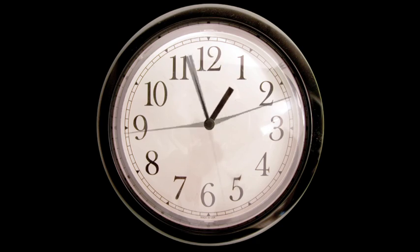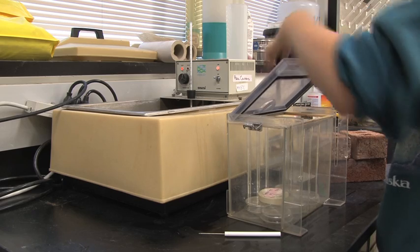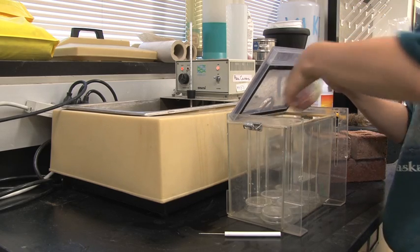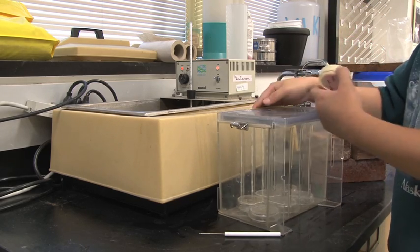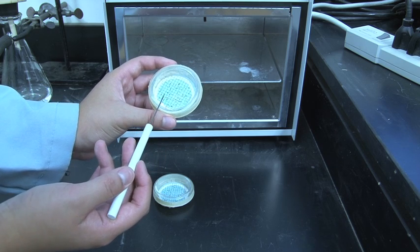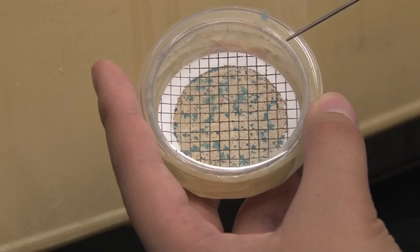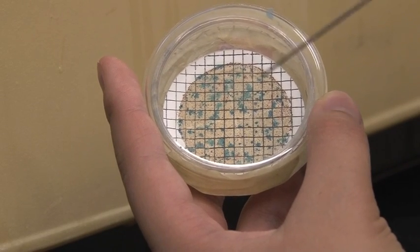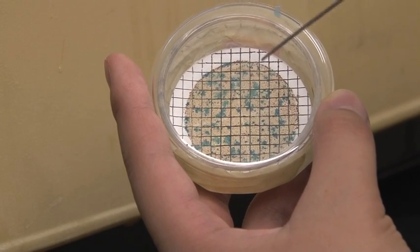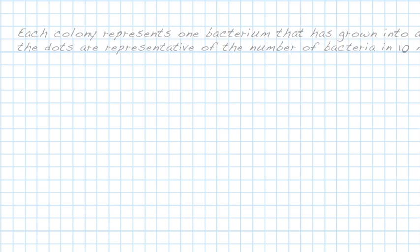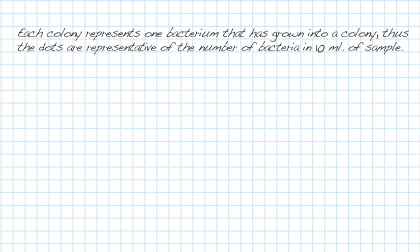After incubating the plate for approximately 24 hours, count the number of bacterial colonies on each plate. For total coliforms count only the red and blue colonies, no others. For fecal coliforms count only the dark blue colonies. Each colony represents one bacterium that has grown into a colony.